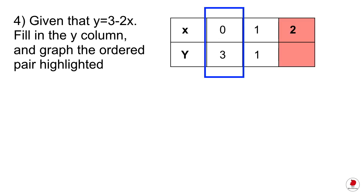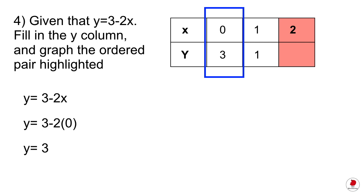When you get a function like this, it's like an input-output system. Take the equation and plug in the x value from the table, which is zero — your answer for y should be 3. Let's try it: plug in zero for x and you get 3. Now plug in 2, which is what they're asking: 3 minus 4 equals minus 1.